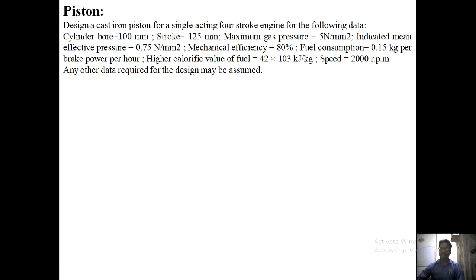The given data is: cylinder bore diameter is 100 mm, stroke is 125 mm, maximum gas pressure is 5 Newton per mm square, indicated mean effective pressure PM is 0.75 Newton per mm square, mechanical efficiency is 80%, fuel consumption is 0.15 kg per brake power per hour, higher calorific value of fuel is 42 × 10³ kJ/kg, and speed is 2000 RPM. Any other data required for design may be assumed.